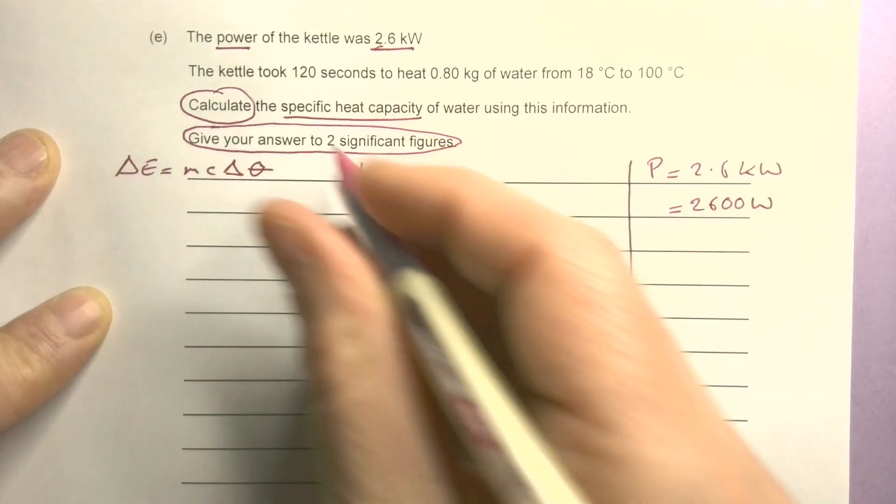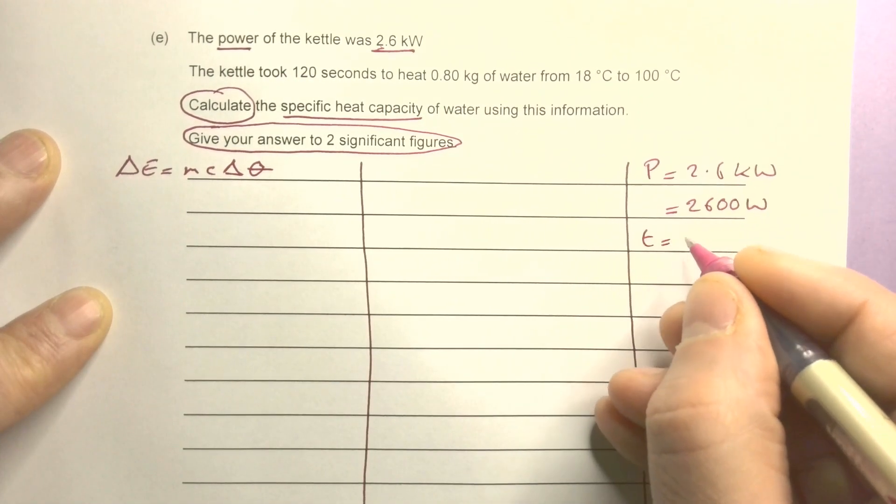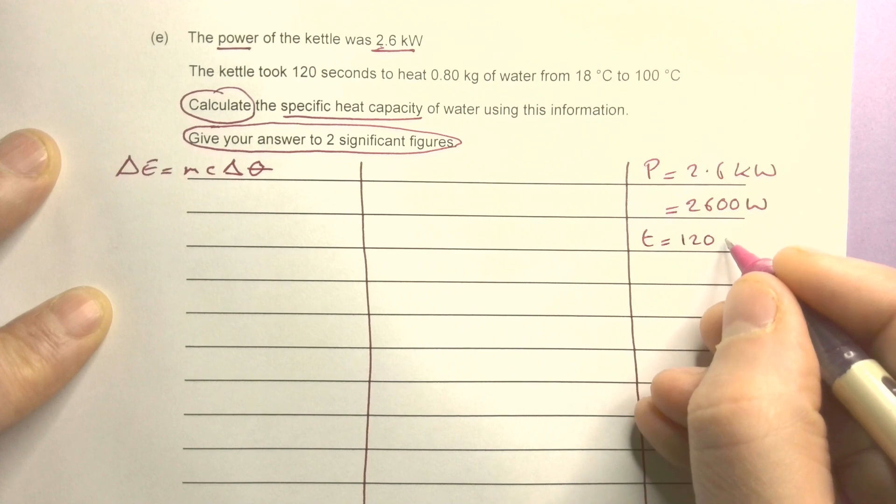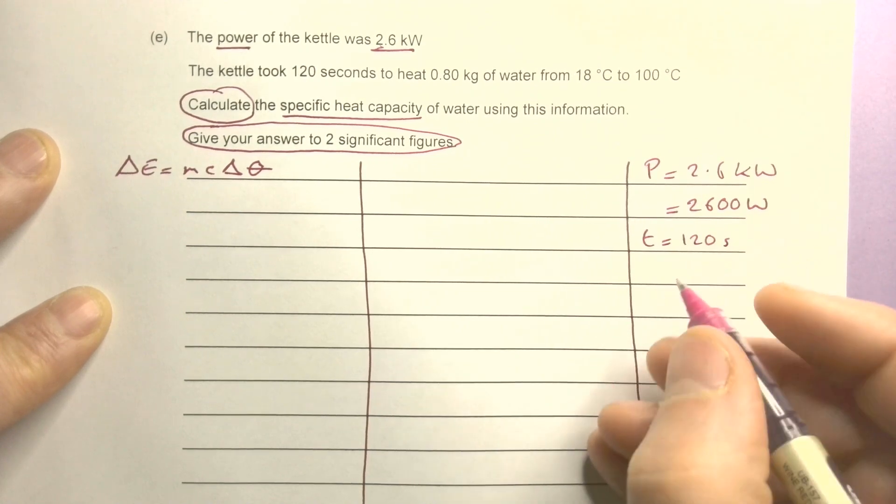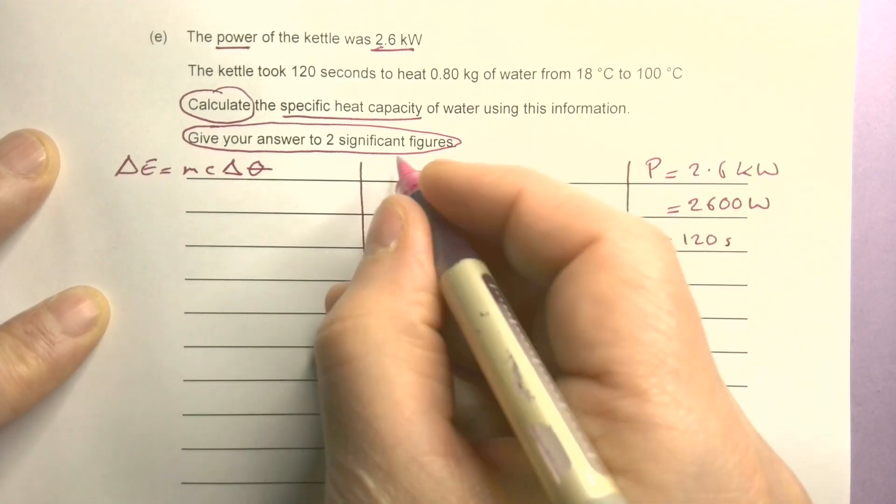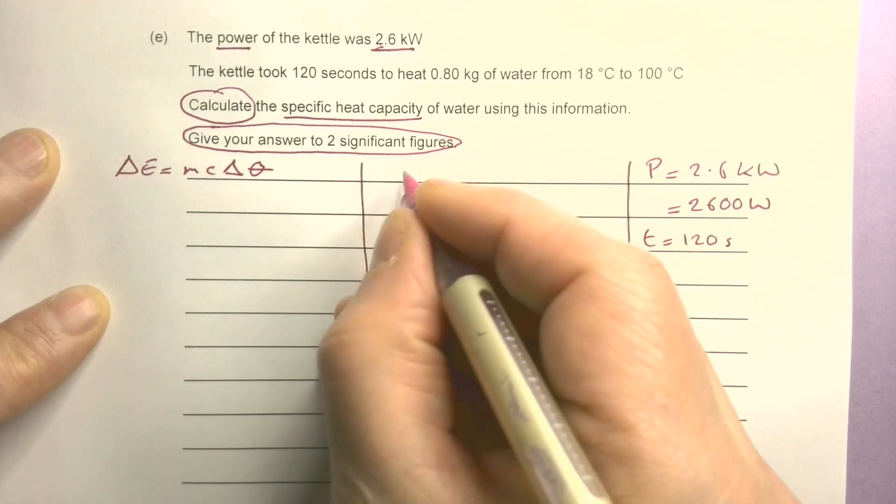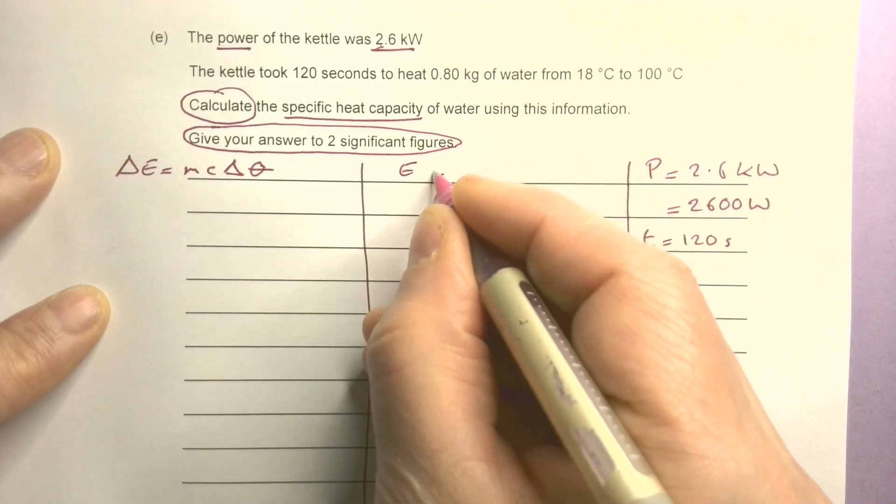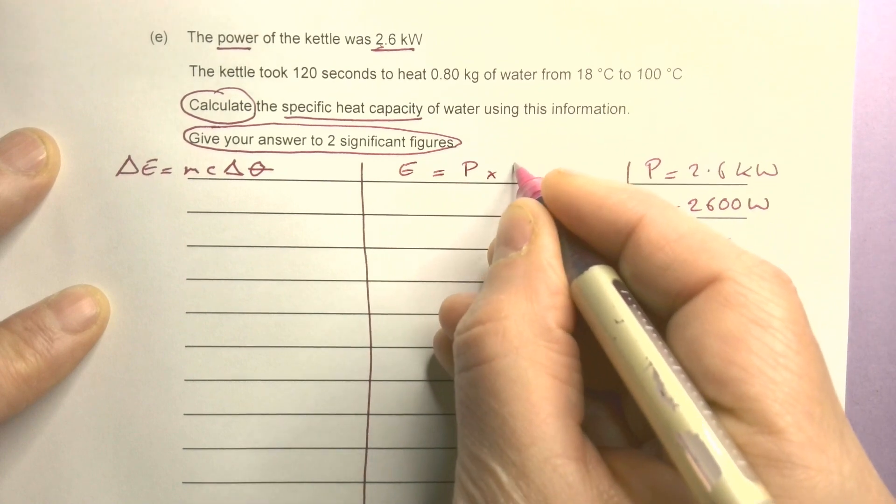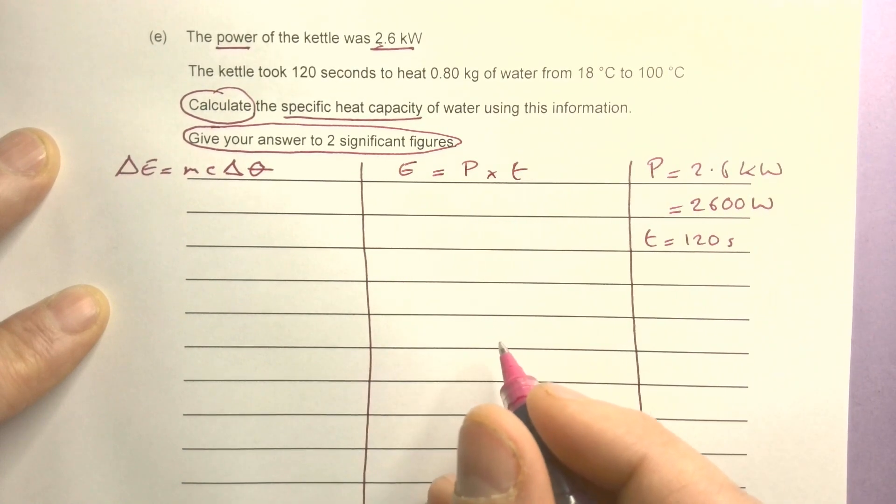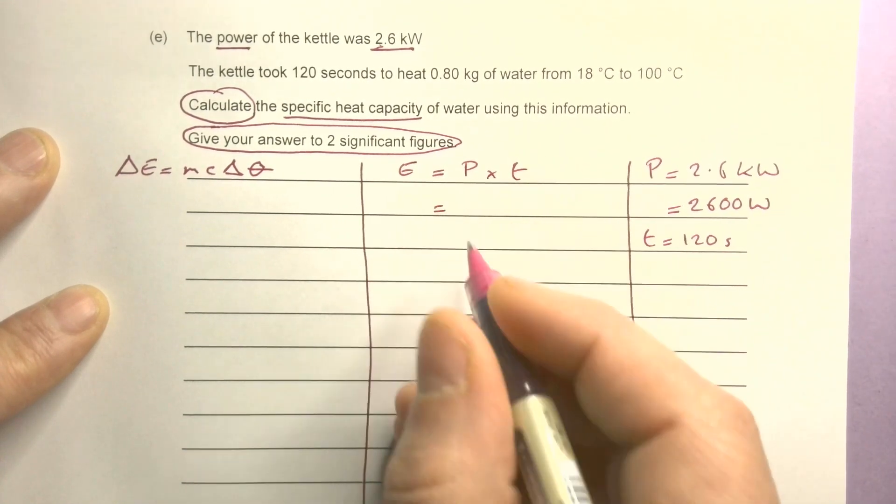I've got time here - 120 seconds. Power and time actually will let me work out the energy. So I know that energy equals power times time, so I can work that out straight away.